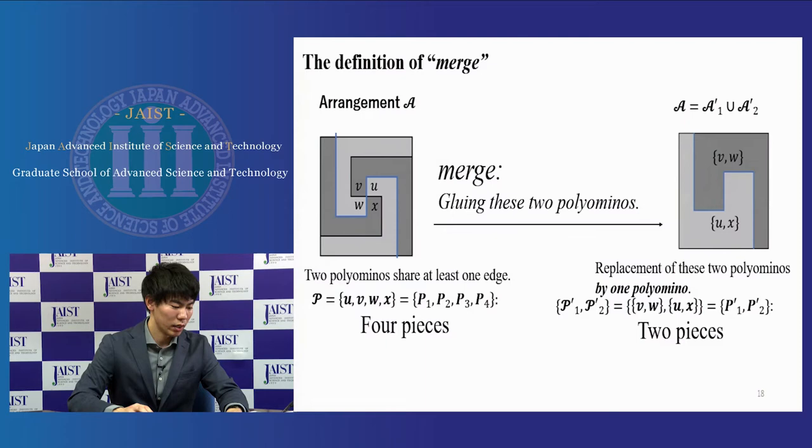Then, the partial arrangement A' is said to be anti-slide when the corresponding polyomino P' is anti-slide after replacing the partial arrangement A' by polyomino P' in arrangement A.